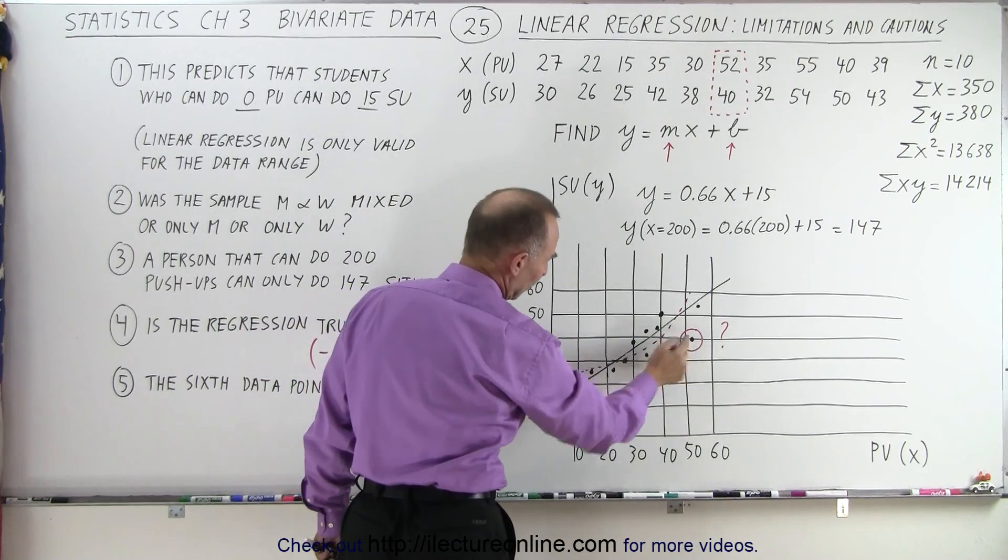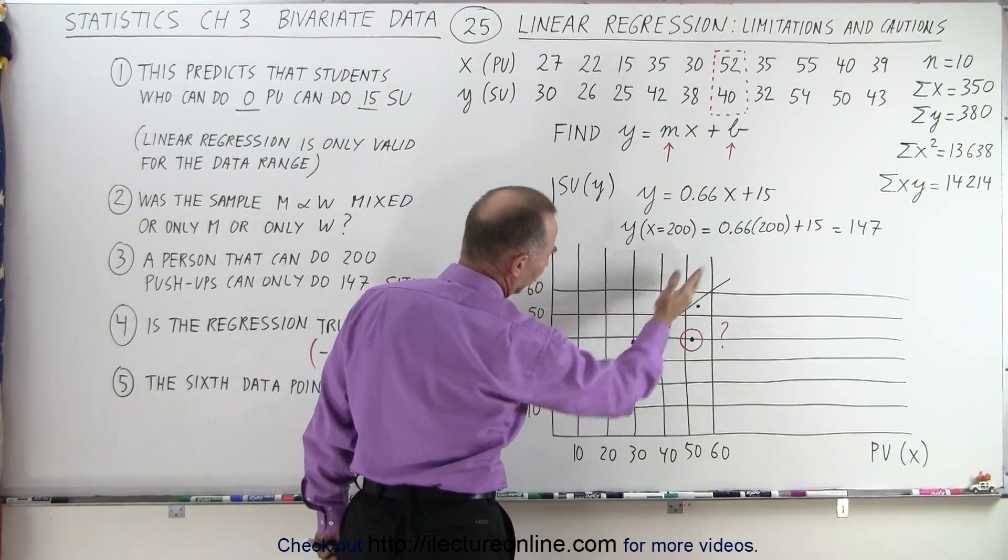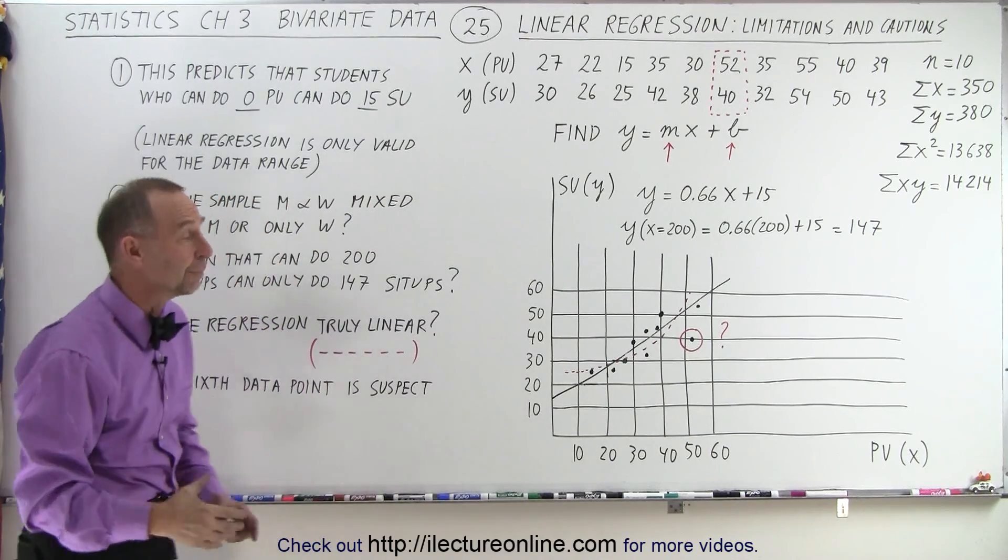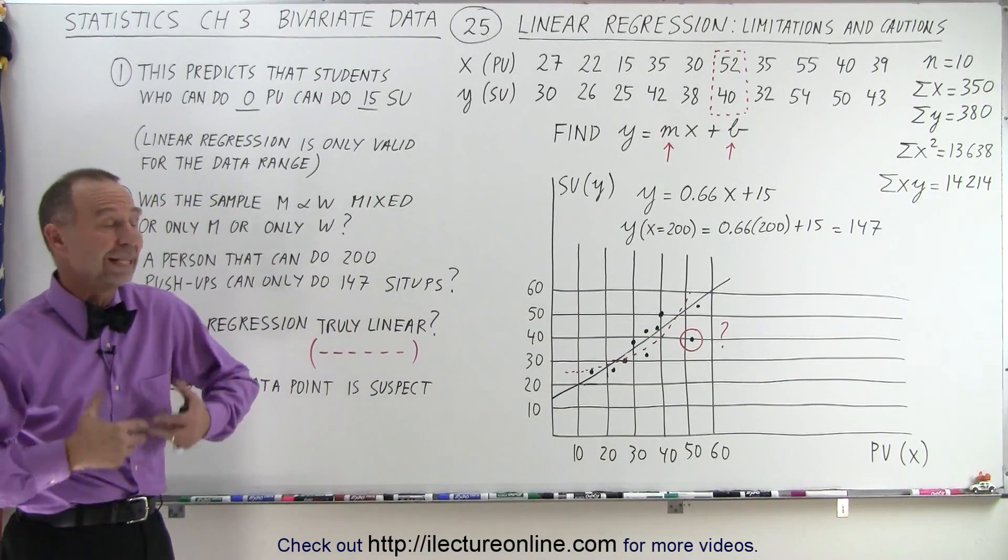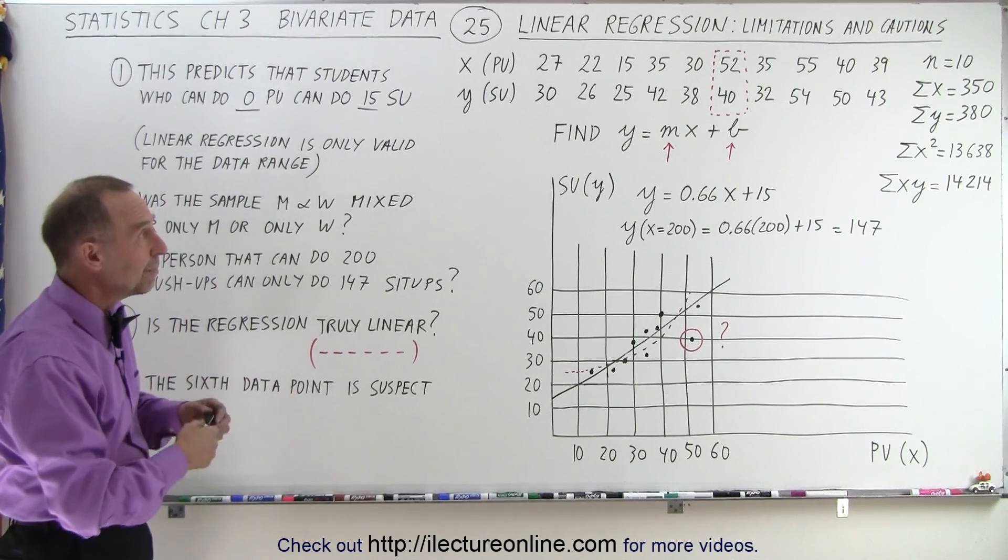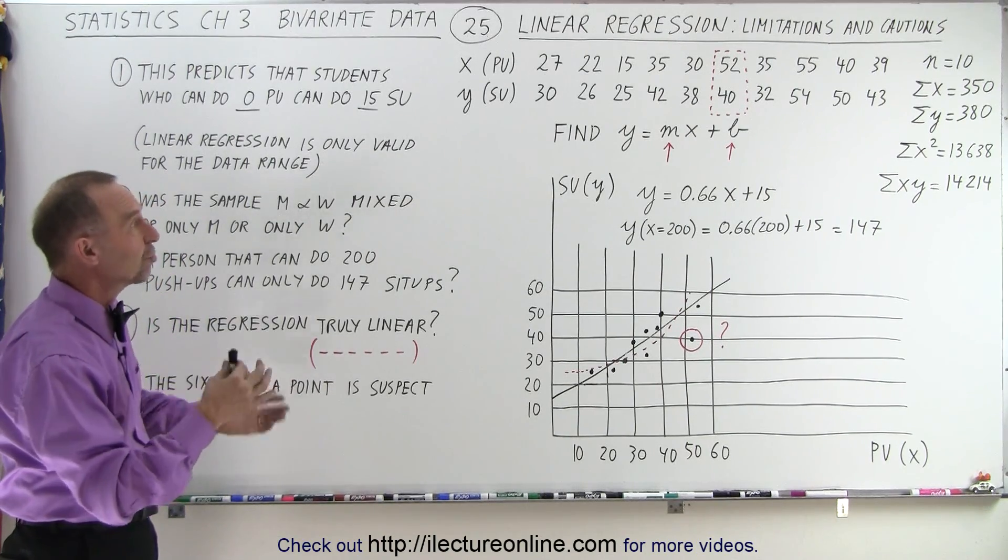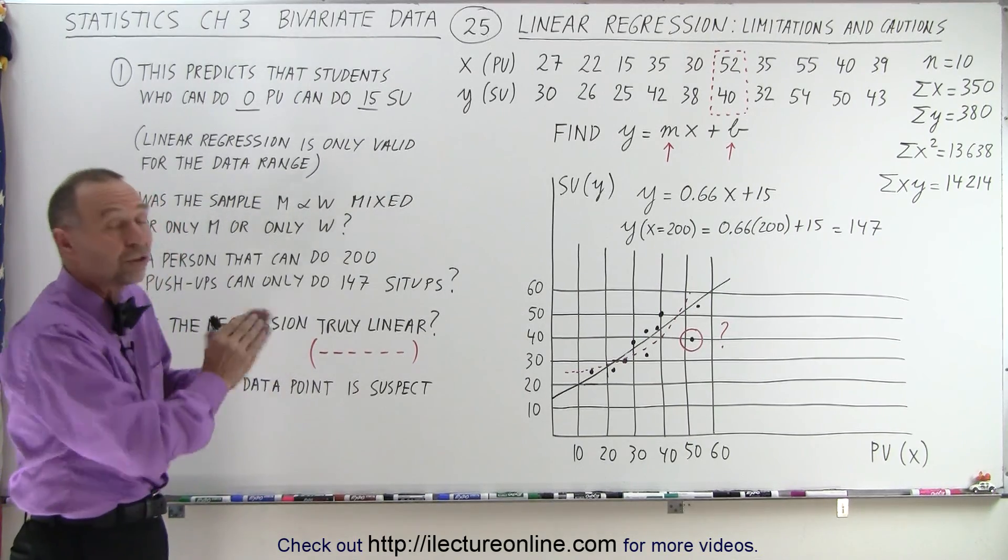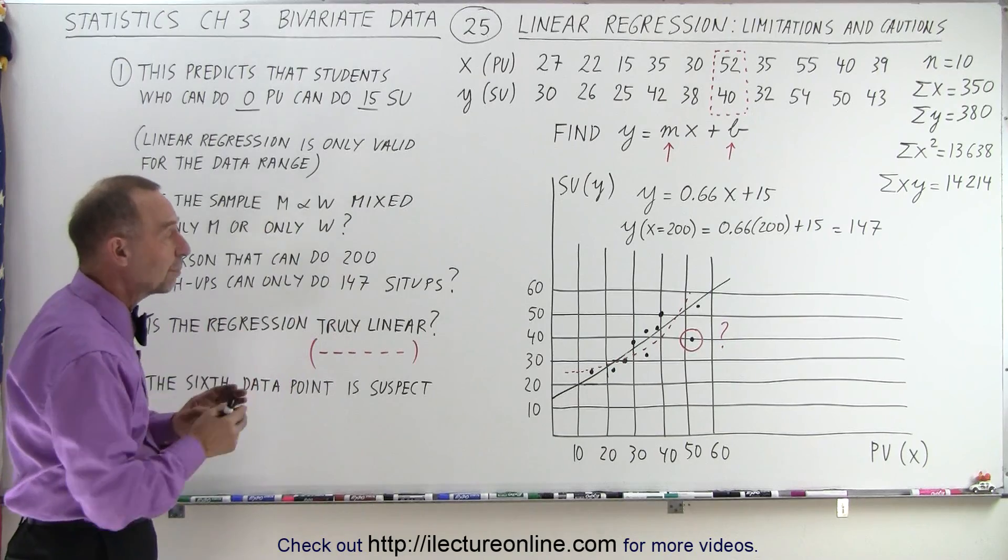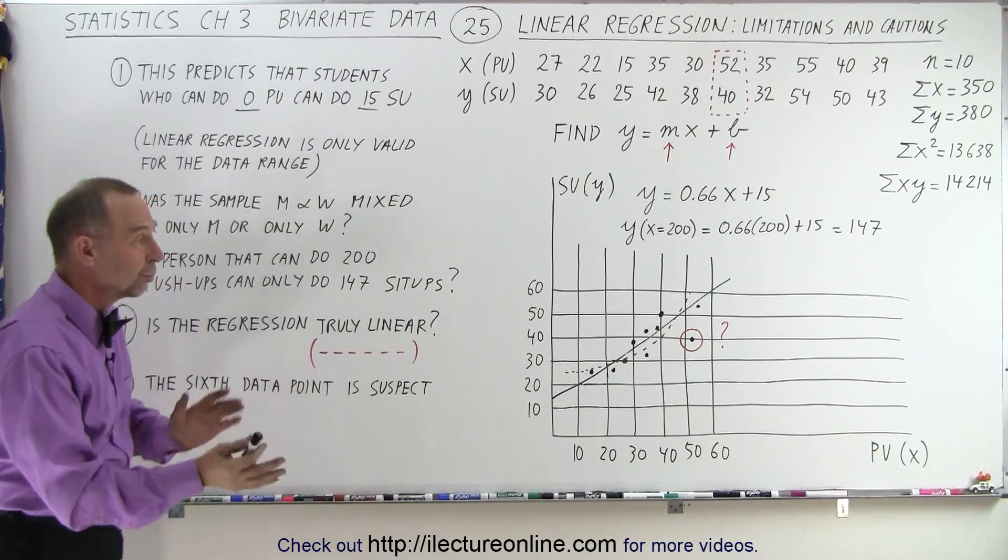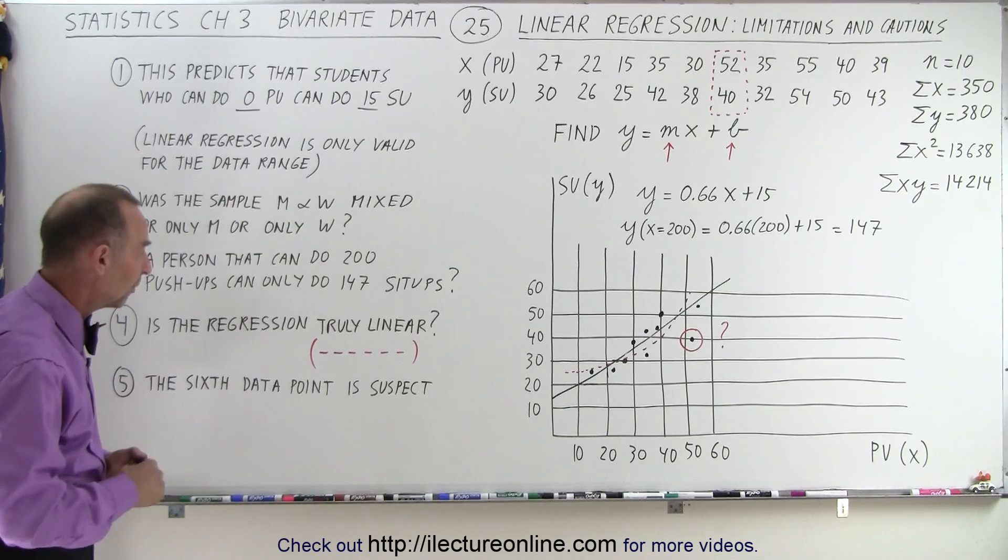So, you can see it's right here on the graph. It's farthest removed from the line, and you wonder about that data point. Is that a valid data point? We don't know anything about what went into that data point. Maybe that person was having a bad day. Maybe that person didn't really try very hard on the sit-ups, but really could have done way more sit-ups. We don't know, and it does throw off our overall concept of what the proper correlation is, the proper regression between push-ups and sit-ups.